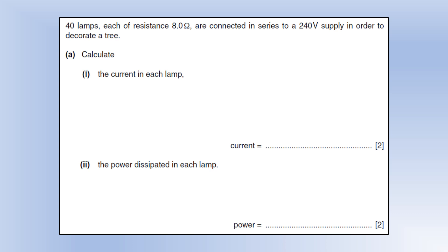The total resistance is going to be 40 times 8, because they're in series, so we just add them all together. The potential difference across the whole lot is 240, so we can use V equals IR to figure out the current.